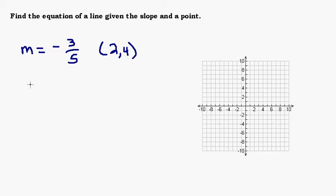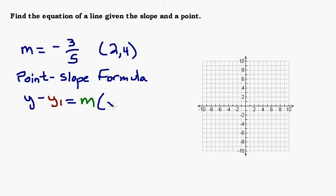So what we want to use to do this is something called the point-slope formula. And if you don't know this, then you need to memorize it. Point-slope formula. And it says y minus, and I'm going to color code this a little bit, y₁ equals, I'm going to make this next one green, m times x minus x₁.